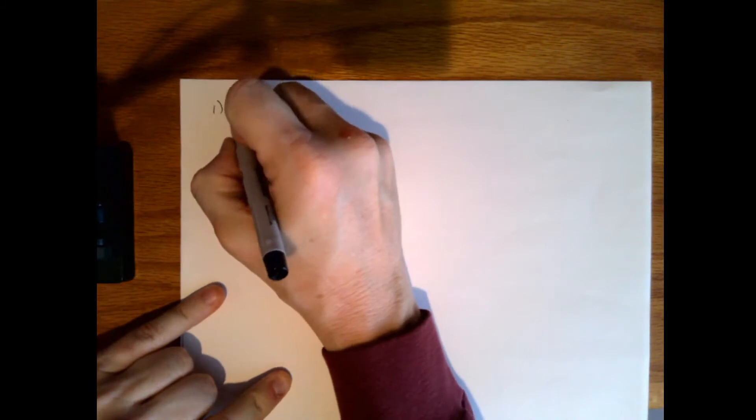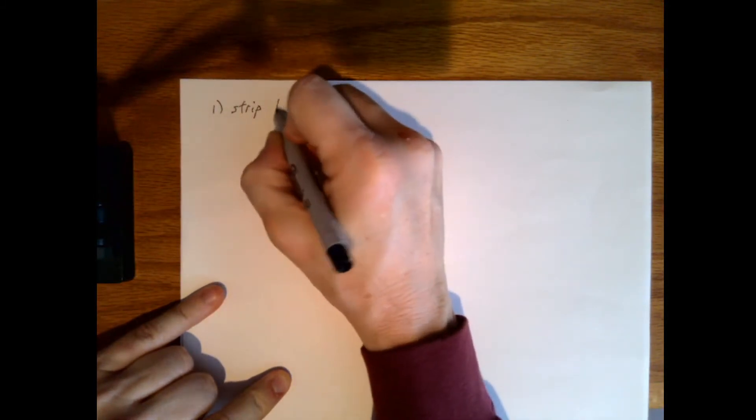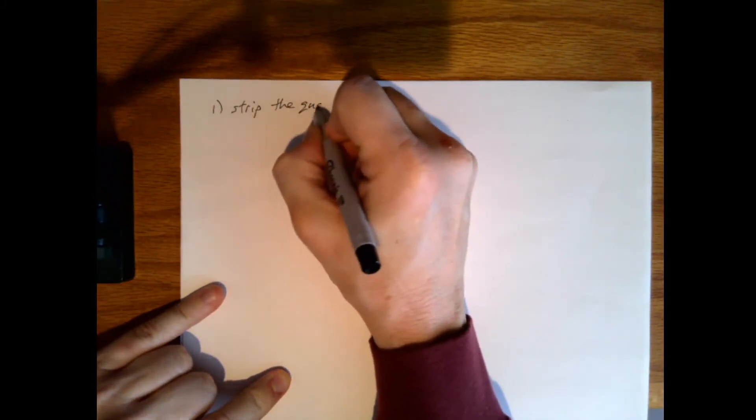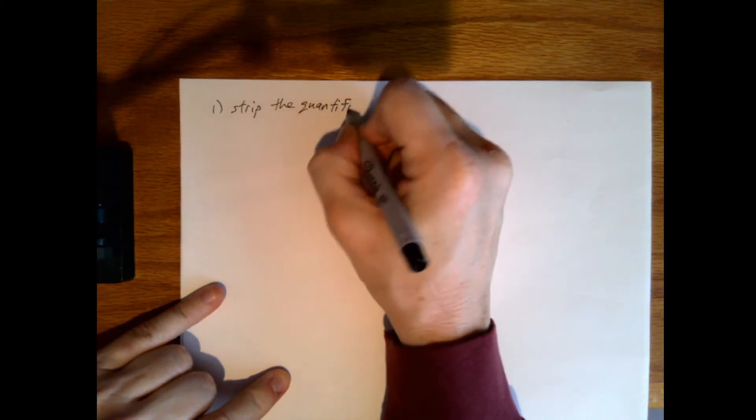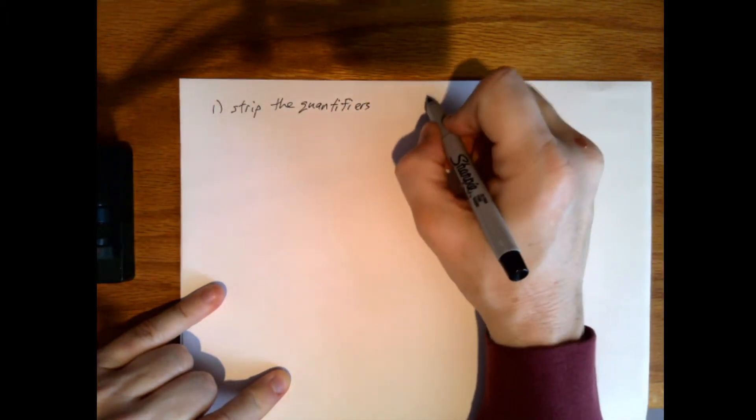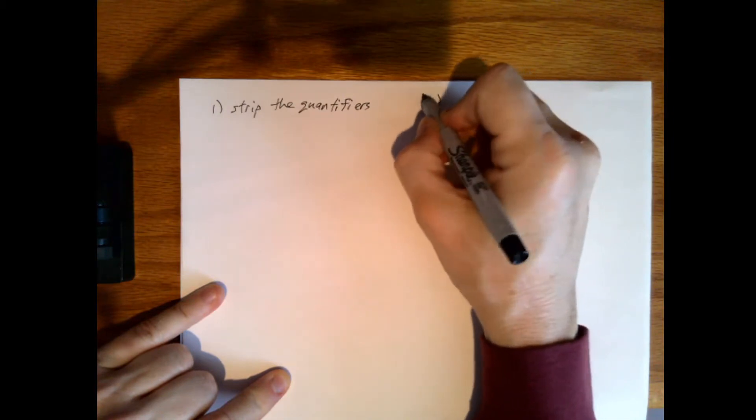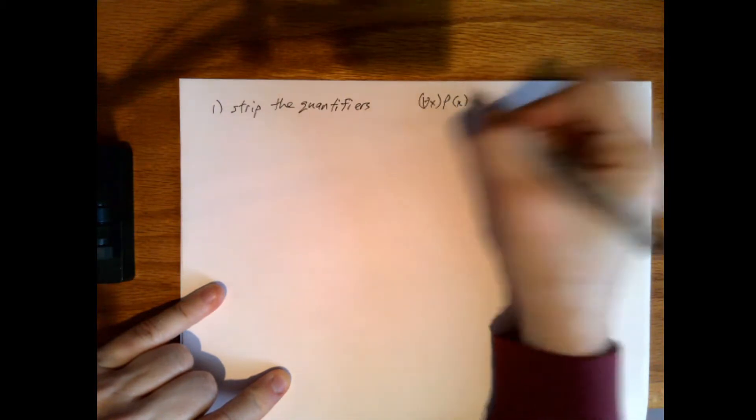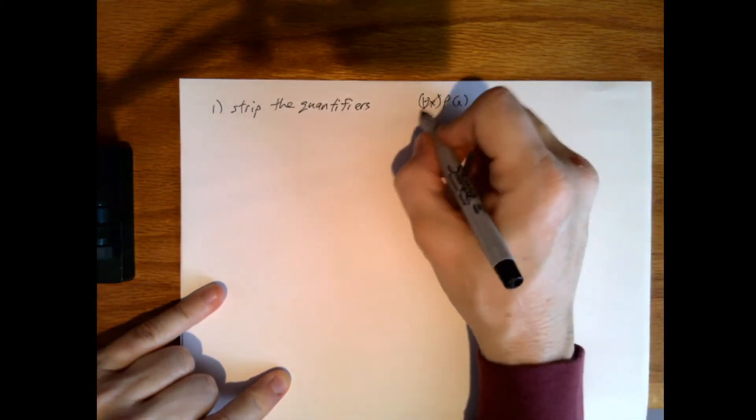The basic idea is this: we need to strip the quantifiers. That is, we have something like p of x - we need to get rid of this part.